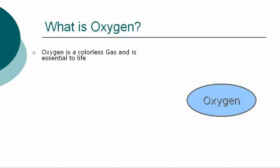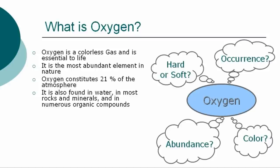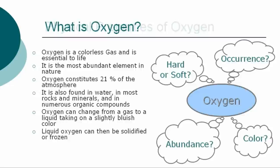What is oxygen? In a general overview of the element, we can at first describe oxygen as a colorless gas. It is the most abundant element in nature and essential to life. Oxygen constitutes 21% of the atmosphere, and it is also found in water, in most rocks and minerals, and in numerous organic compounds. Oxygen can change from a gas to a liquid, taking on a slightly bluish color. Liquid oxygen can then be solidified or frozen.